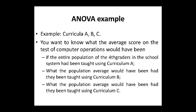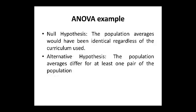Example: there are three types of curriculum to teach students — A, B, and C. As a researcher, you want to know what the average score on the test of computer operations would have been if the entire population of fourth graders in the school system had been taught using curriculum A. The null hypothesis in this example will be that the population average would have been identical regardless of the curriculum used, whereas the alternative hypothesis H-A is that the population averages differ for at least one pair of the population.